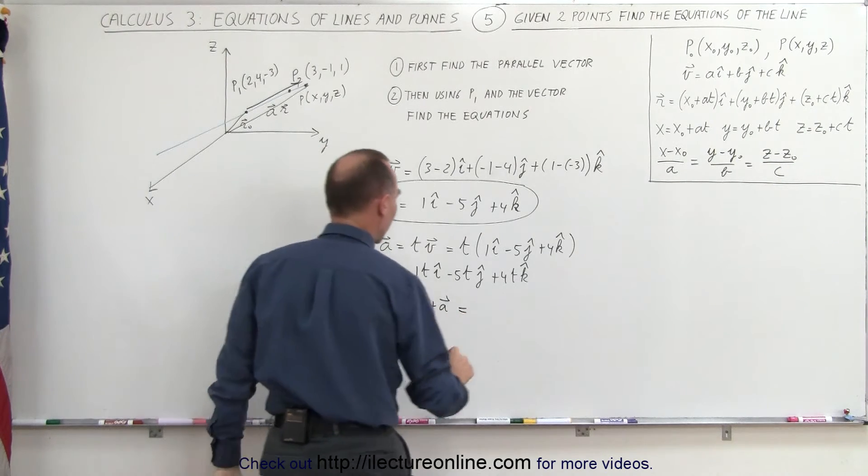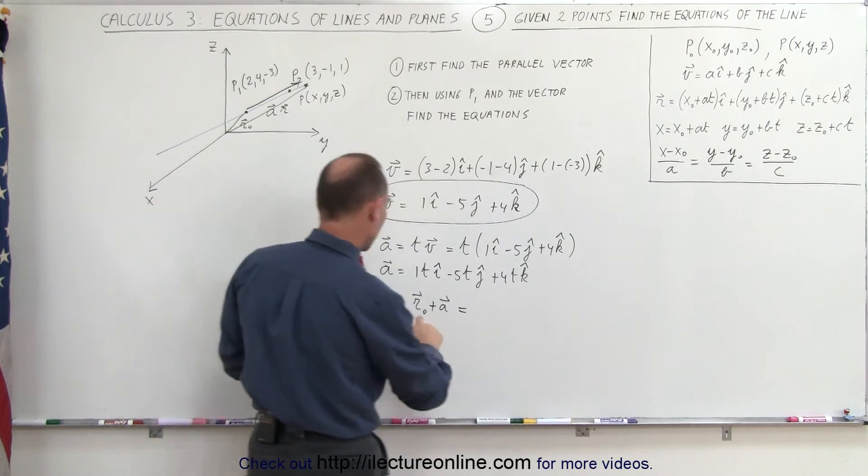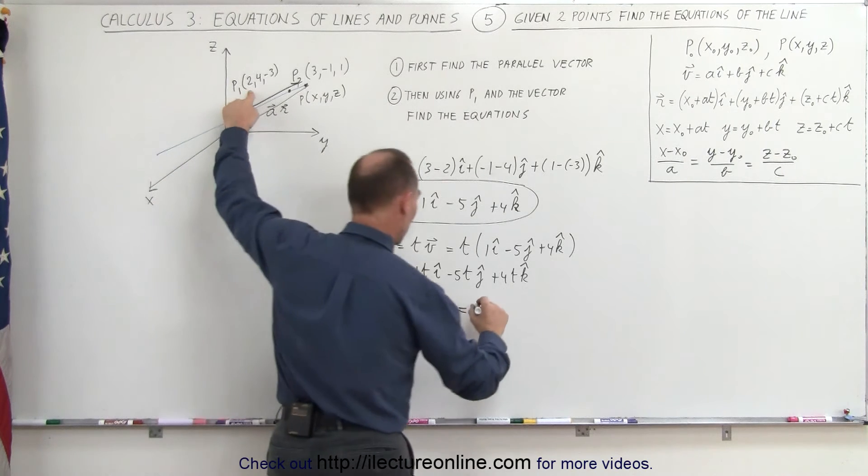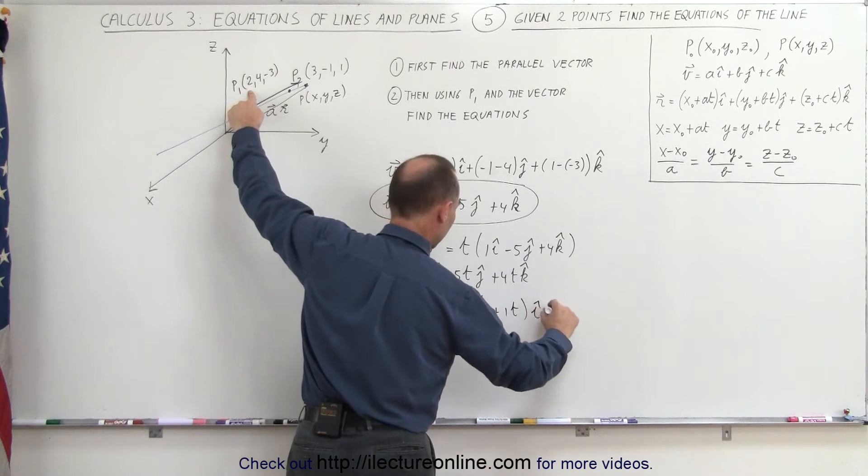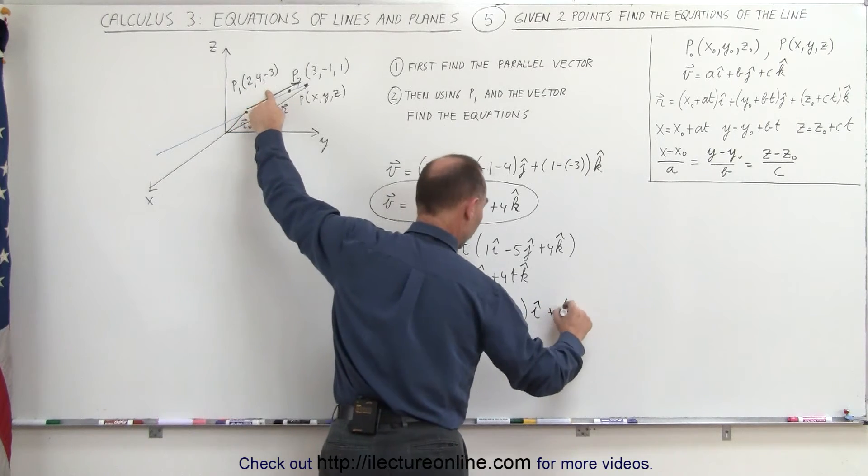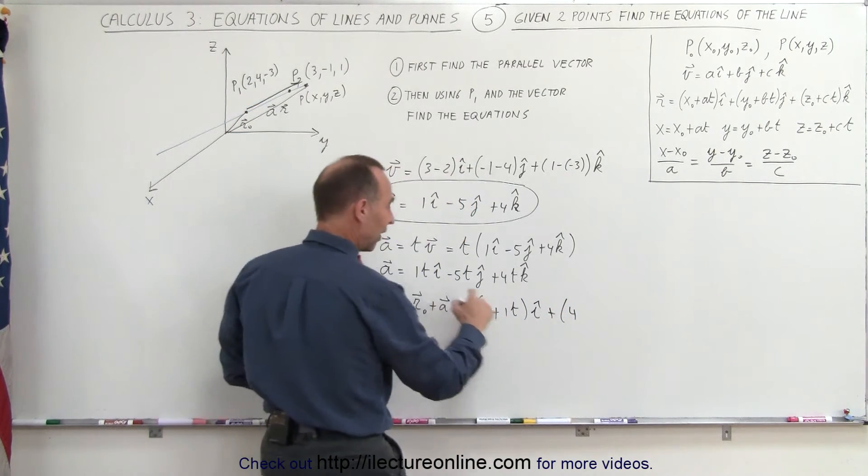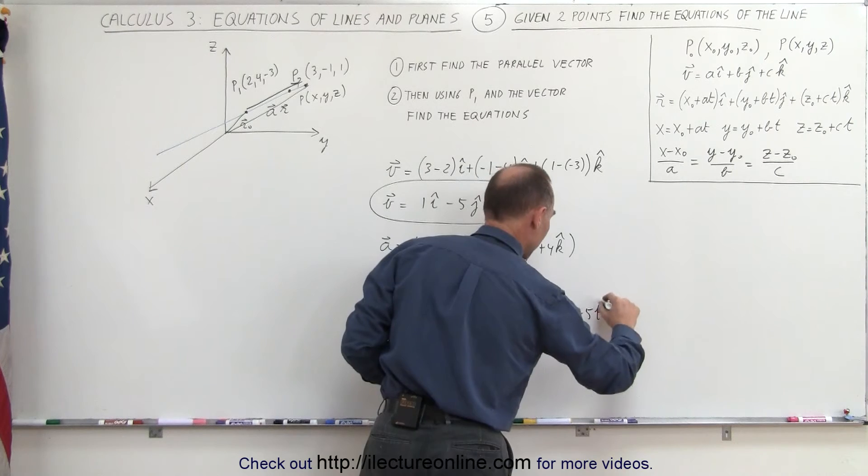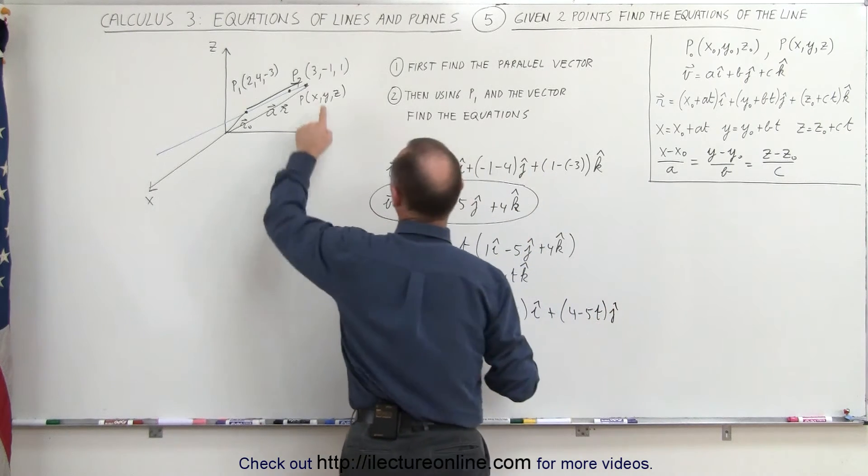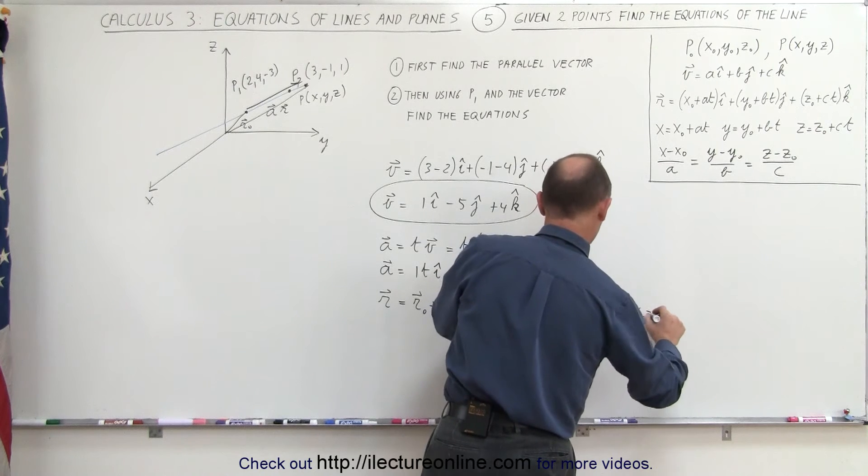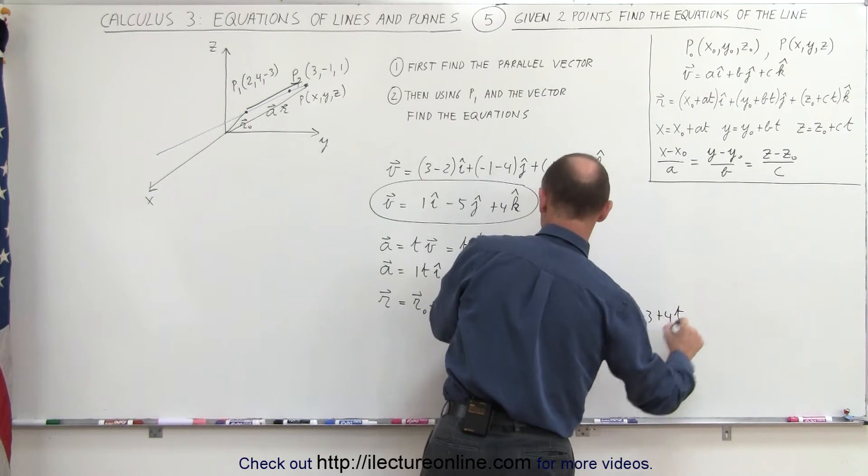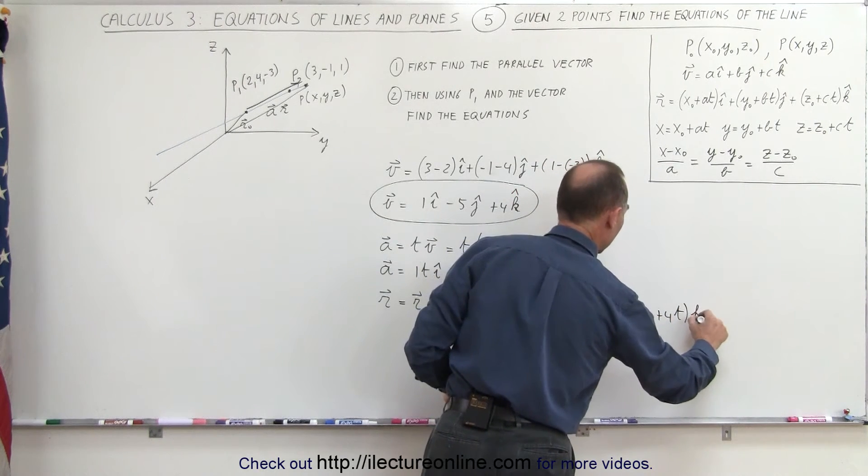Which means that this can now be written as the r sub not vector would be 2 plus 1t in the i direction, plus 4 minus 5t in the j direction, and plus negative 3 plus 4t in the k direction.